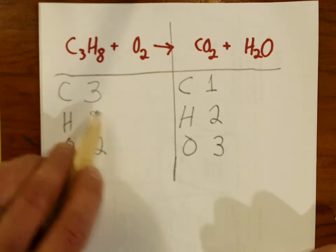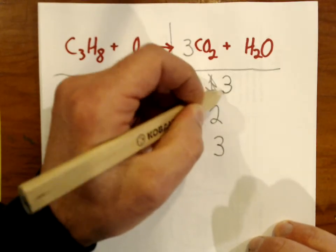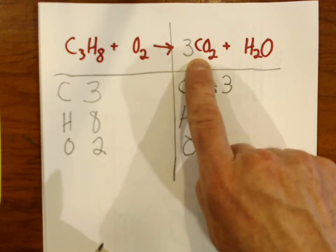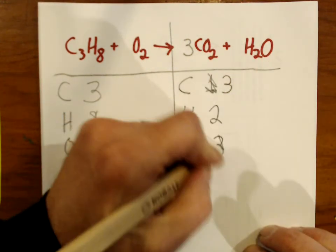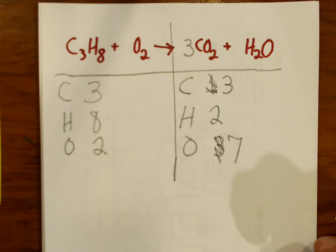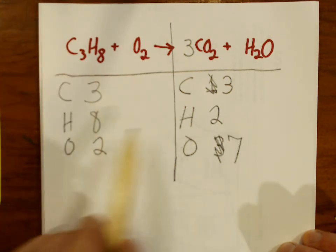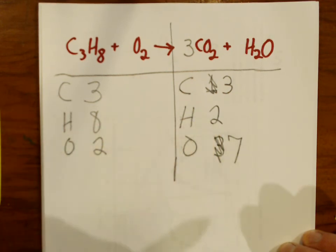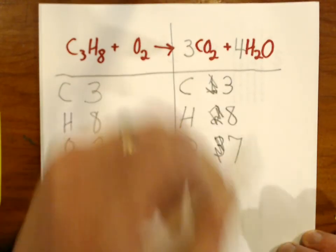Carbon has three atoms on the reactant side but only one on the product side. So let's make the one into three by putting a three in front of the compound containing carbon. We now have three carbons. But that changes the number of oxygens — a three in front of CO2 now means six oxygens there, plus that one more from water. Oxygen just became seven. I'm not going to deal with seven right now — I'm going to deal with hydrogen. Hydrogen has eight atoms on the reactant side and only two on the product side. If I take the two hydrogens and multiply by four it'll become eight, so I'll put a coefficient of four in front of the compound containing hydrogen — hydrogen becomes eight.